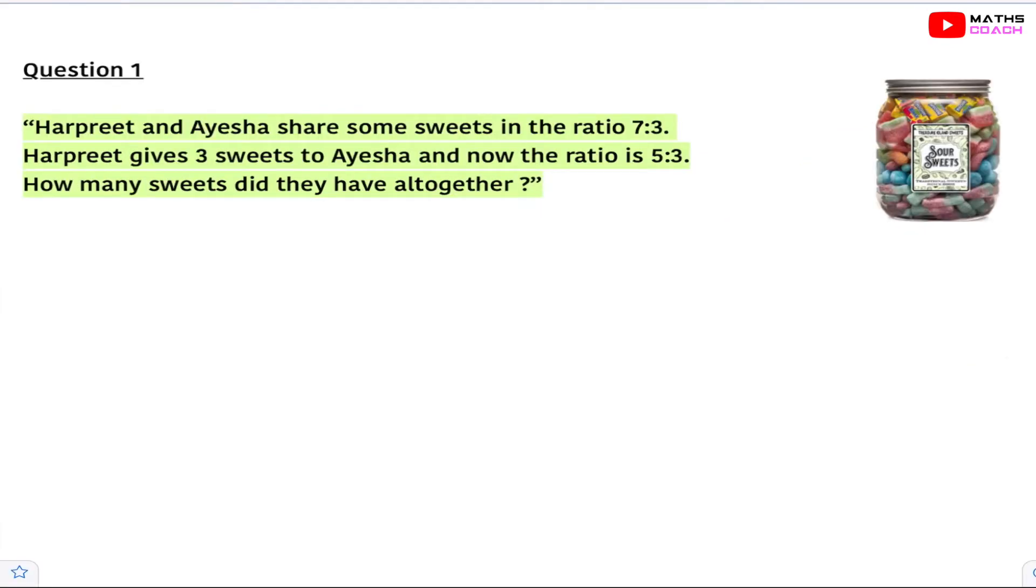Question one. Harpreet and Ayesha share some sweets in the ratio 7:3. Let's write that down. So H and A for Harpreet and Ayesha in the ratio 7 to 3. Now we don't know how many sweets they have originally, so what we can do is write 7x and 3x. Harpreet gives 3 sweets to Ayesha and the ratio changes to 5 to 3. So what would that look like?